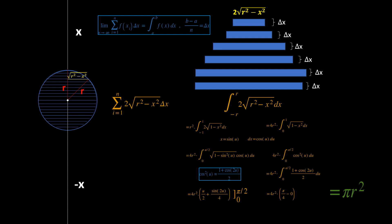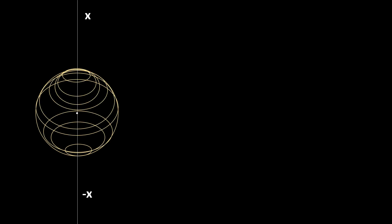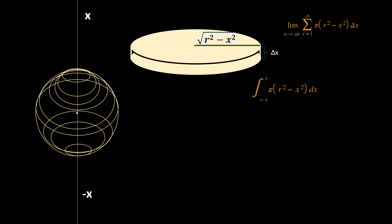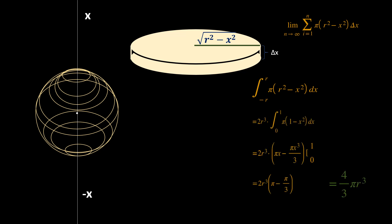Now we do the same thing for the three-dimensional sphere. We chop a three-dimensional sphere into little disks, each with a width delta x and a radius of square root of r squared minus x squared. The volume of the sphere is the sum of pi times the radius of each disk squared times the width delta x. As delta x goes to dx, we replace this by the integral from negative r to r of pi times (r squared minus x squared) dx, and you can check for yourself that this is indeed equal to four-thirds pi r cubed.